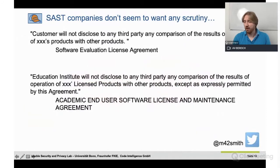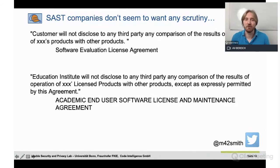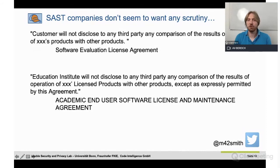However, after obtaining academic licenses for all the commercial products, we found clauses hidden in the licenses saying things like: "Customer will not disclose to any third party any comparison of the results of operation of [product] with other products." That was in the software evaluation license agreement. Another example: "Education institutions will not disclose to any third party any comparison of the results of operation of [product] with other products, except as expressly permitted by this agreement" — and this agreement didn't permit it. The companies were not open to having an independent institution assess usability and effectiveness of their static analysis software.